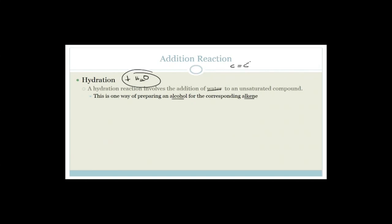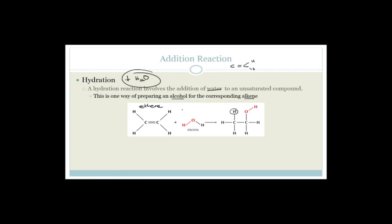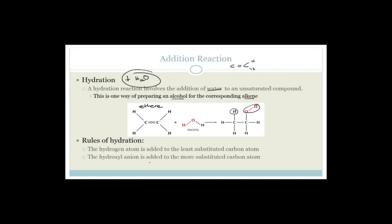For example, ethene — C double-bonded C — plus excess water: the double bond breaks, a hydrogen adds to one carbon and a hydroxyl group (-OH) adds to the other, giving ethanol. The rule is: the hydrogen atom is added to the least substituted carbon atom, and the hydroxyl group is added to the more substituted carbon atom.